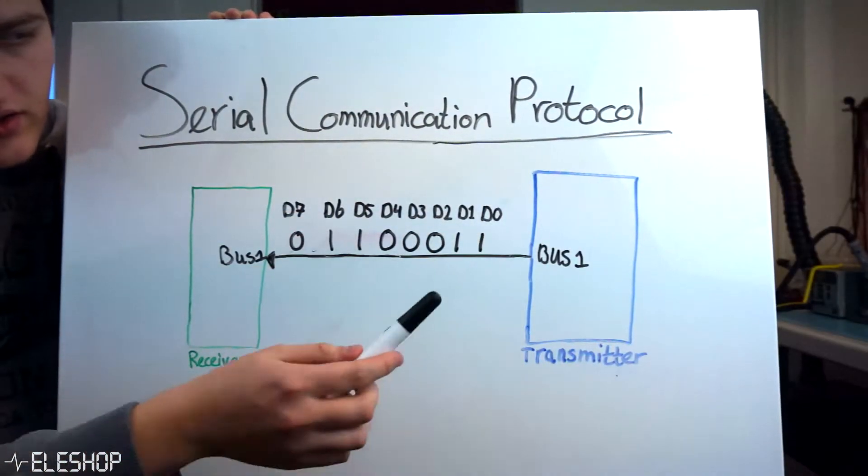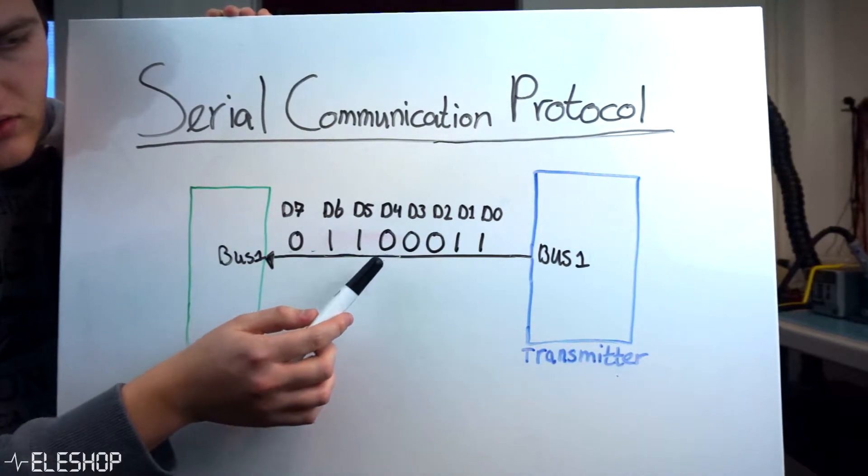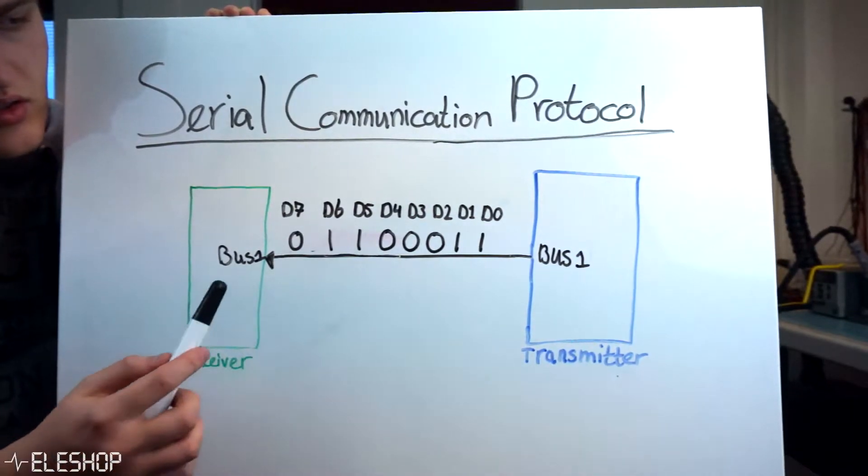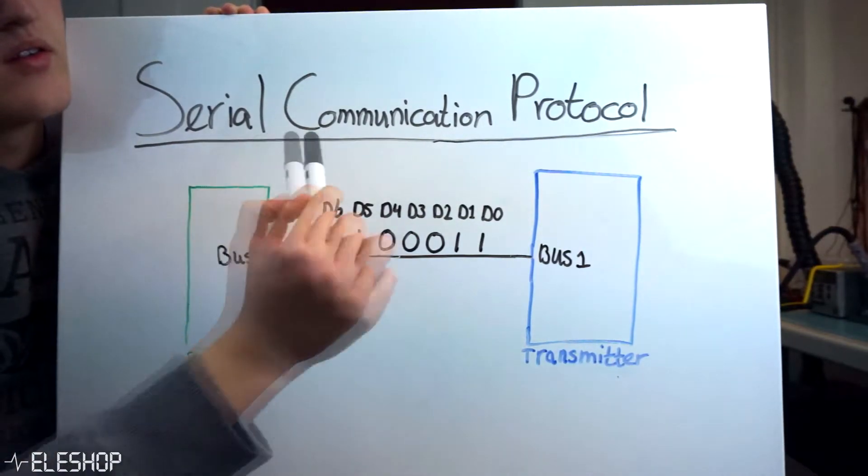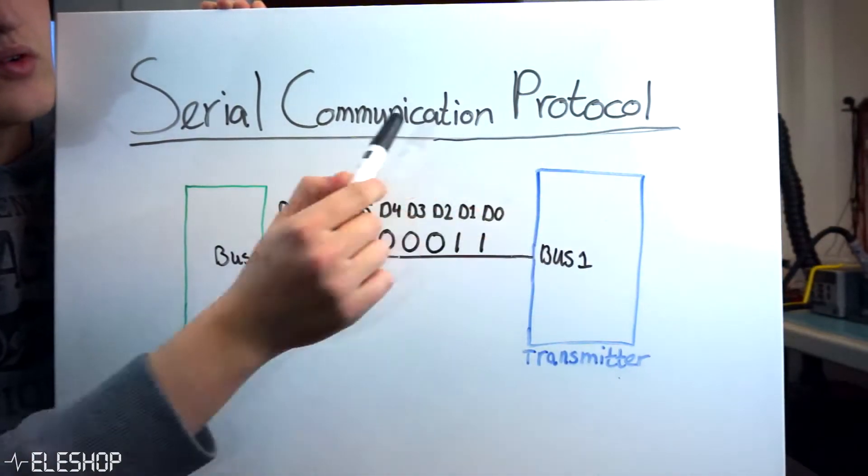If the data bits are transmitted one at a time in a sequential manner, or in other words in series over the data bus or communication channel, then the communication protocol is known as serial communication protocol.